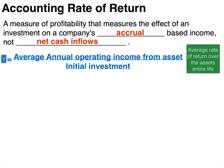The first form of the formula is to take the average annual operating income from the asset and divide that by the initial investment. This calculates the average rate of return over the asset's entire life. The accounting rate of return uses the initial investment as the denominator for all three forms.